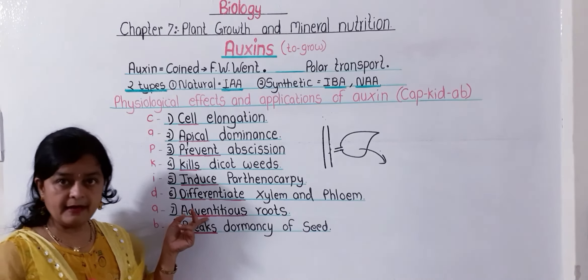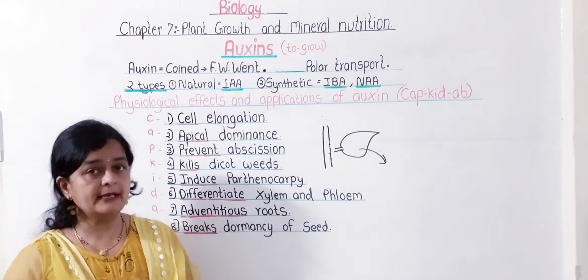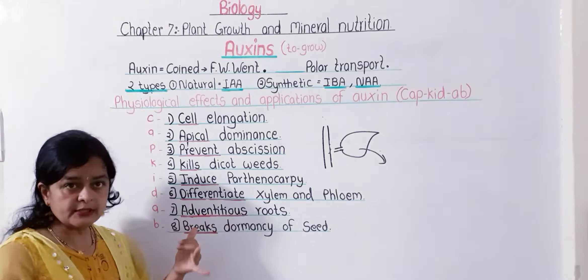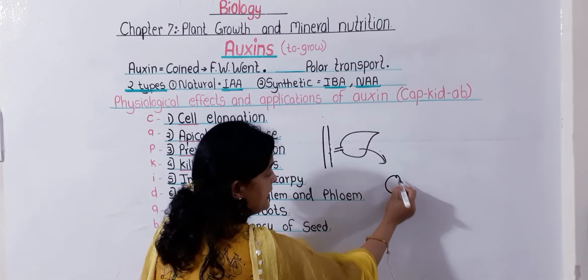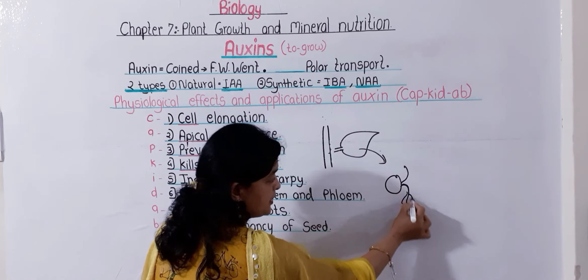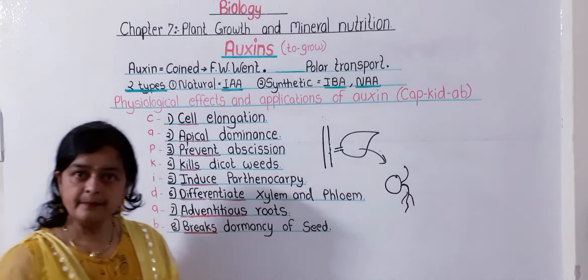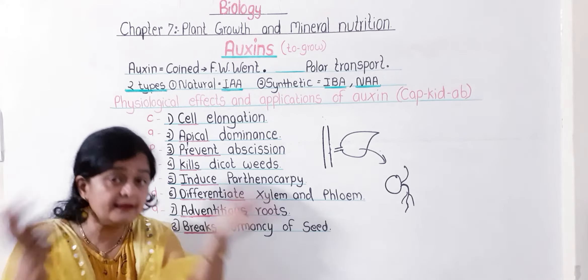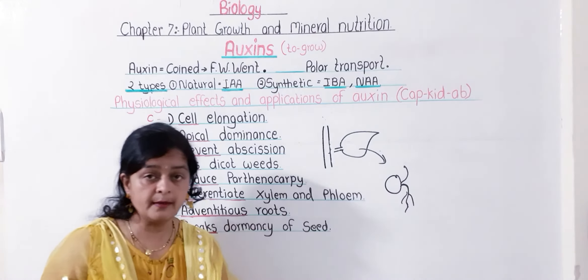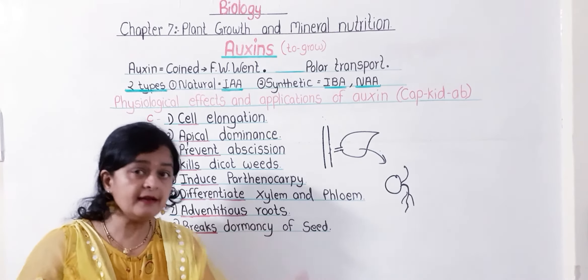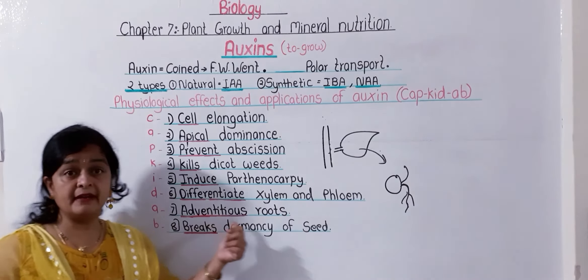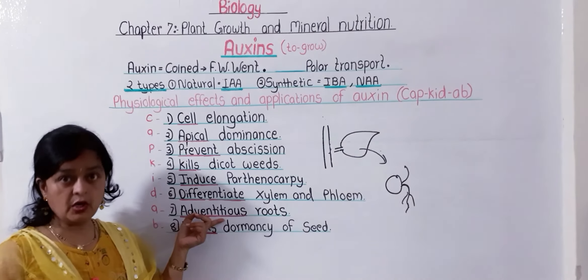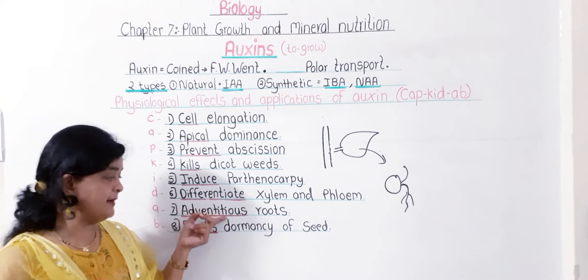The seventh function is adventitious roots. There are two types of roots: true roots and adventitious roots. True roots develop from the radicle of a seed. Adventitious roots grow from any part other than the radicle. Auxin plays an important role in the production and development of adventitious roots.